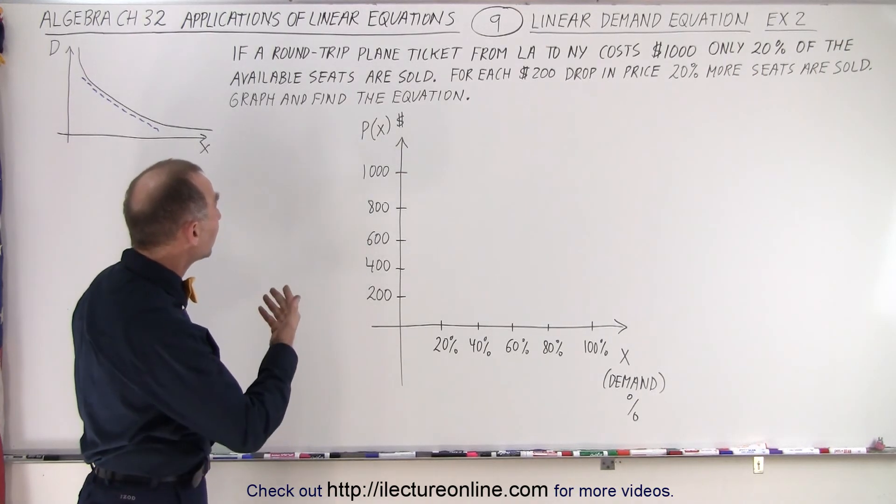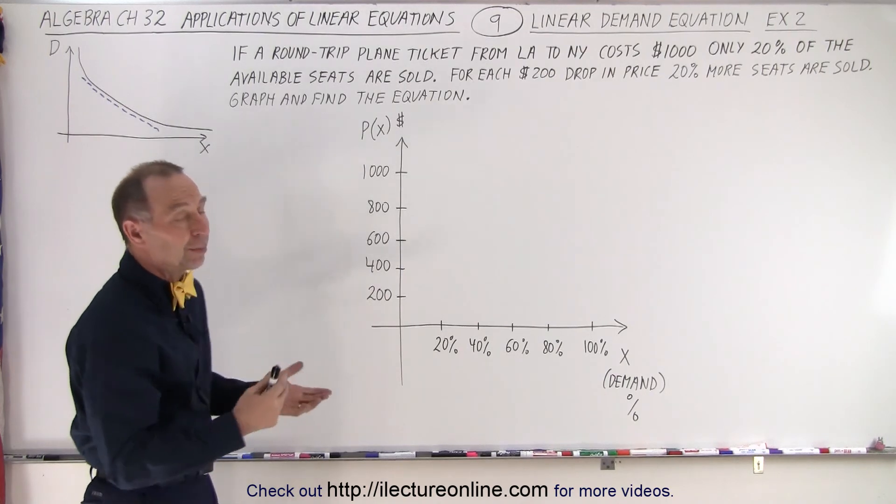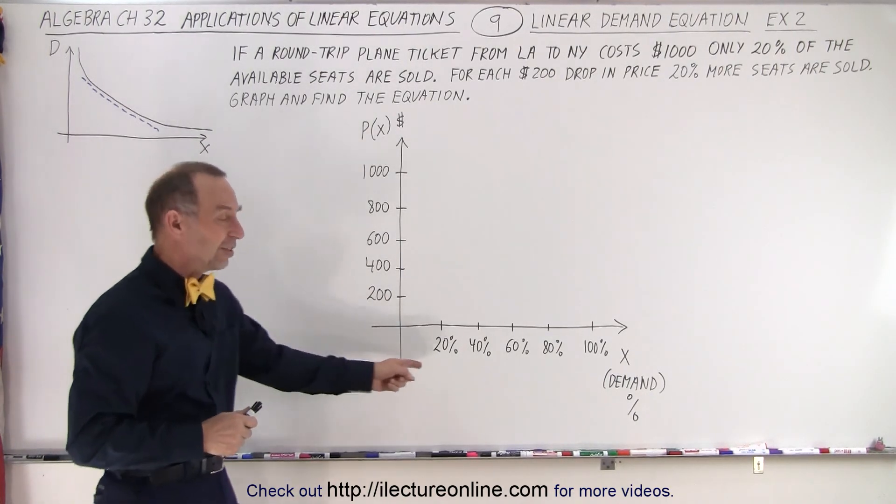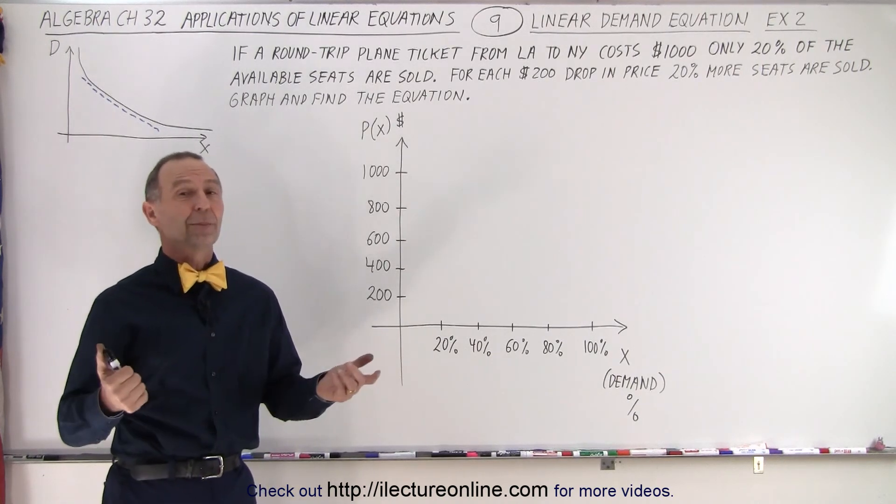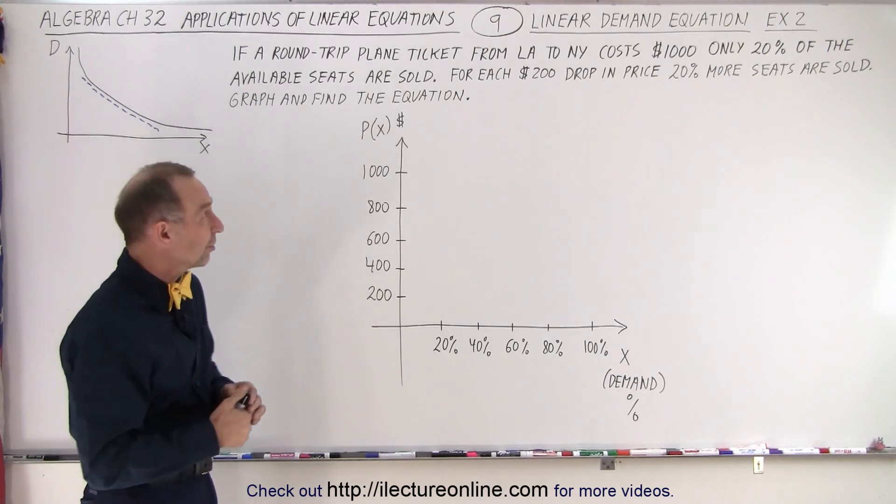Let's say that an airline company is selling plane tickets between LA and New York, round-trip tickets. If they set the price at $1,000, they will only sell 20% of their available seats. So the plane will only be 20% full, which is not a good way to run a business.